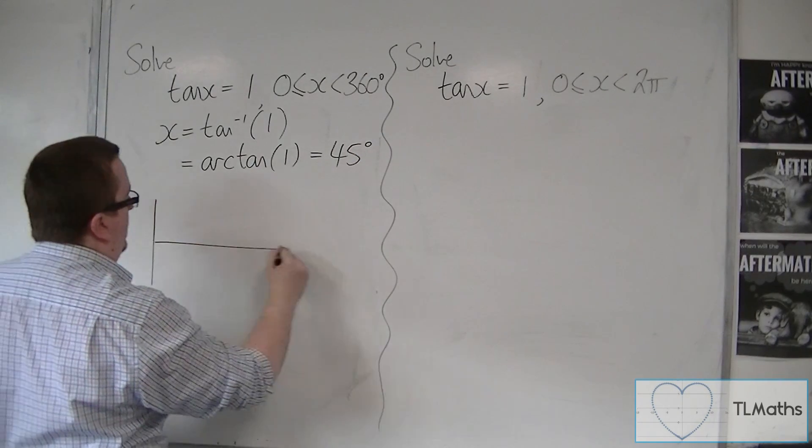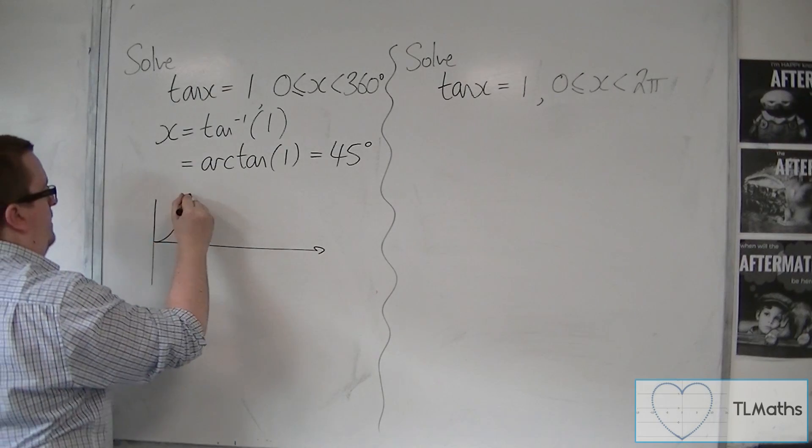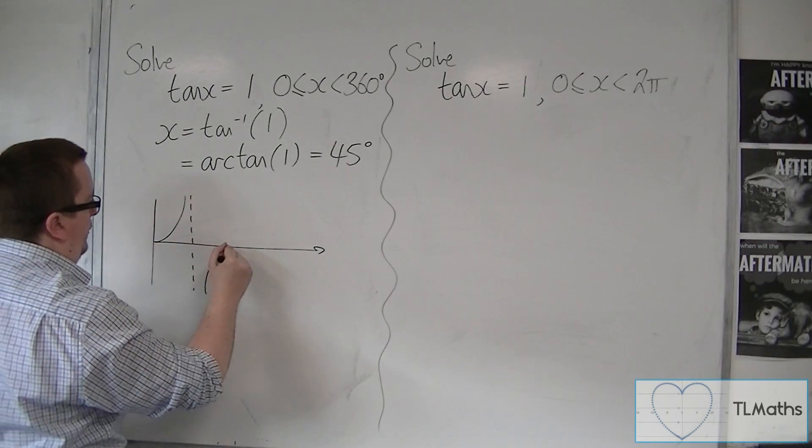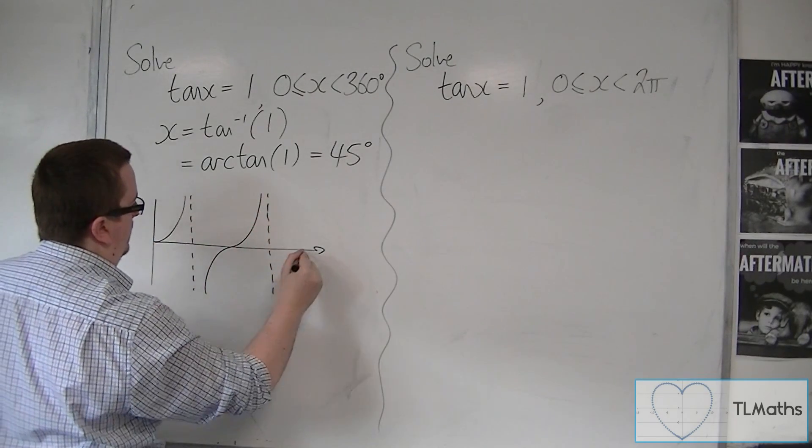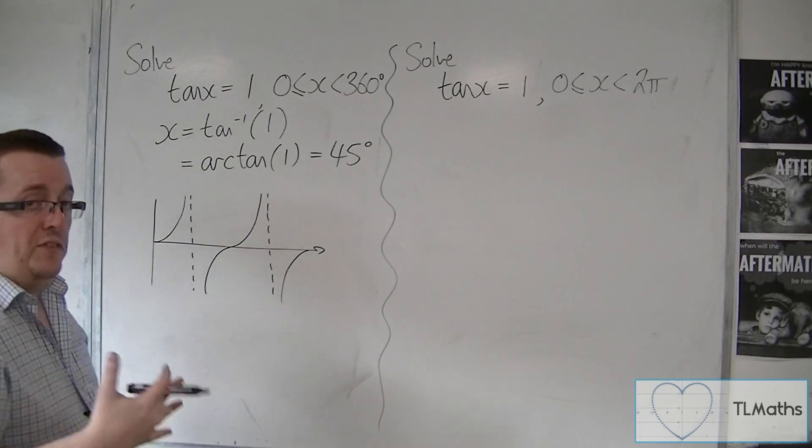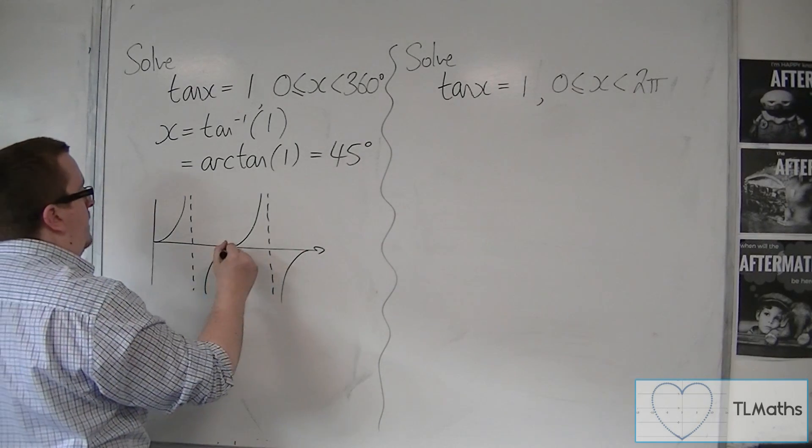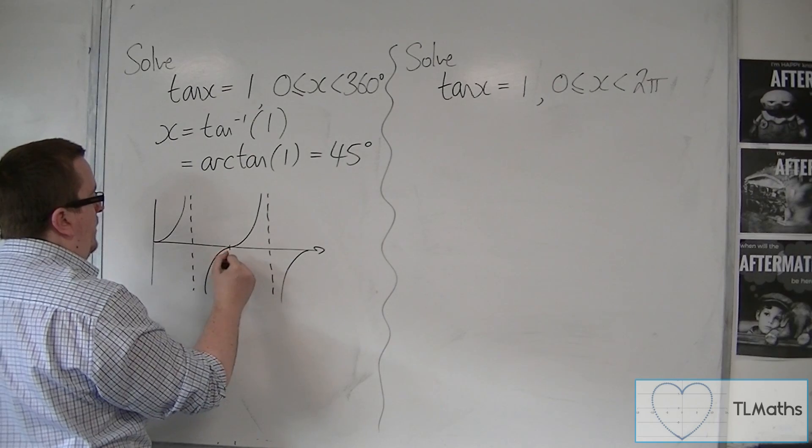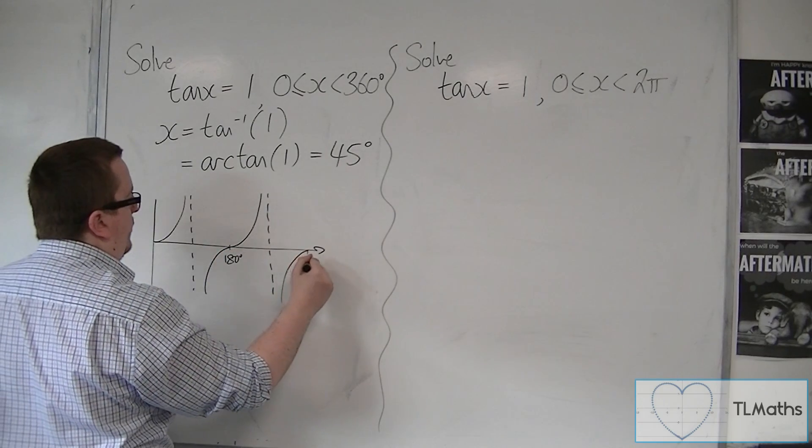Then we sketch tan. Now tan looks something like that. It doesn't need to be perfect again. I'm just going to label a few points, so that's 180, that's 360.